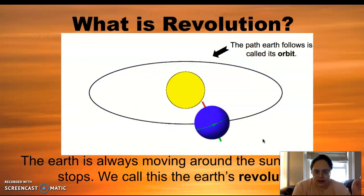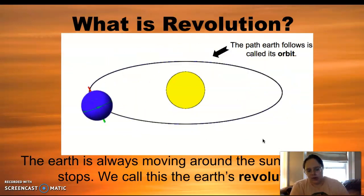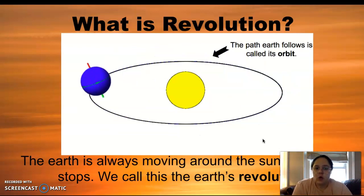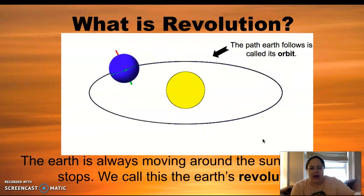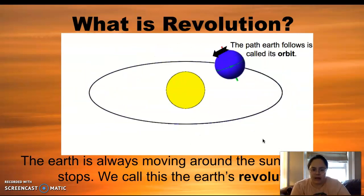All right, revolution. The Earth is always moving around the sun and it never stops. We call this Earth's revolution. And you can see that line right there is going to be the orbit because that is the path that Earth follows around the sun.